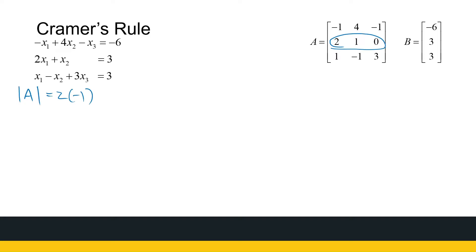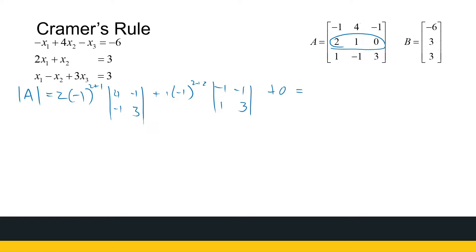So it's two times minus one to the power row two, column one — so it's two plus one — times the determinant of four, minus one, minus one, three, plus one times minus one to the power two plus two, row two column two, times the determinant of minus one, minus one, one, and three, plus zero. That gives me two times minus one, so it's minus two times twelve minus one is minus eleven, plus one times one, so it's plus one times minus three minus minus one, so it's minus three plus one, which is minus two. So I've got minus twenty-two minus two, which is minus twenty-four.